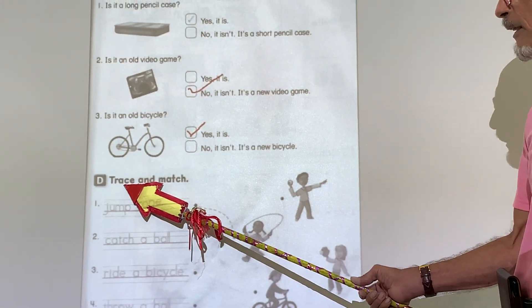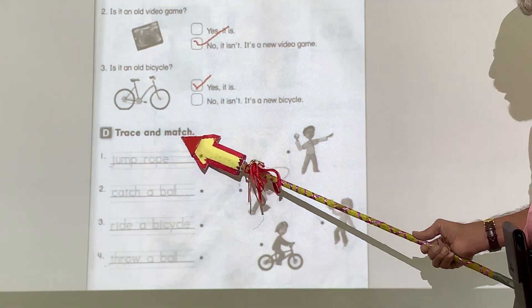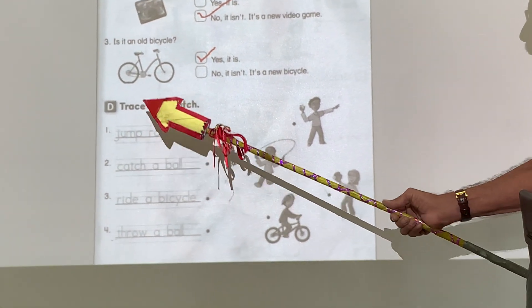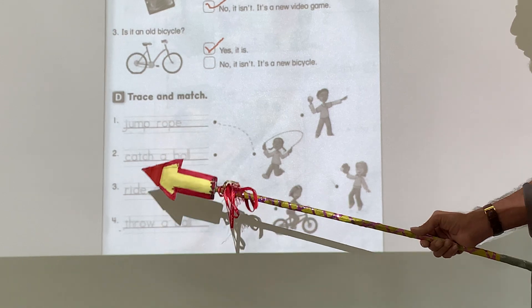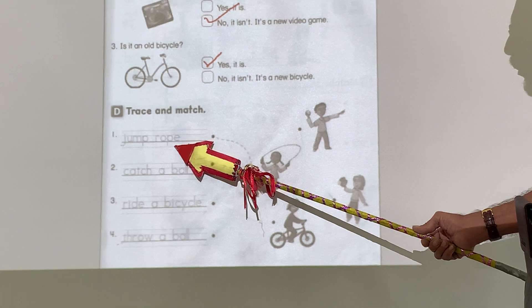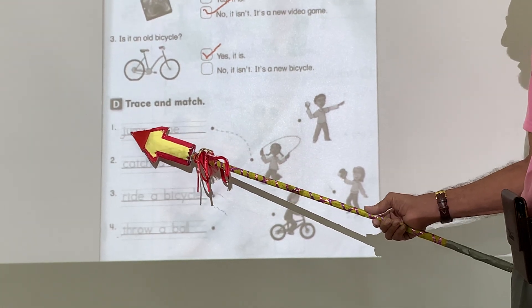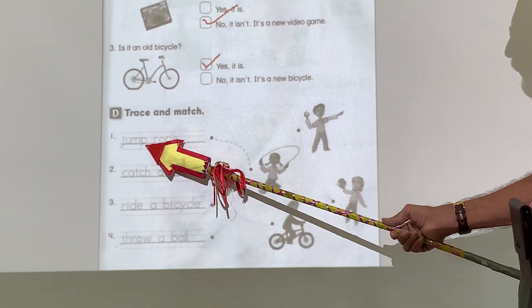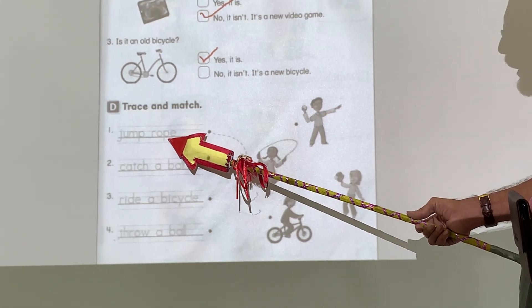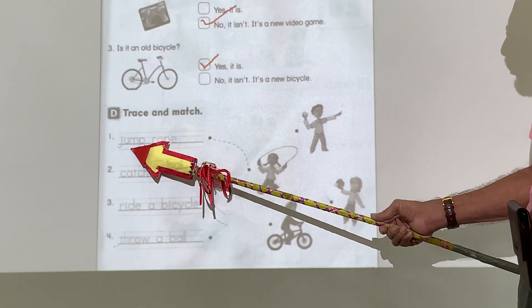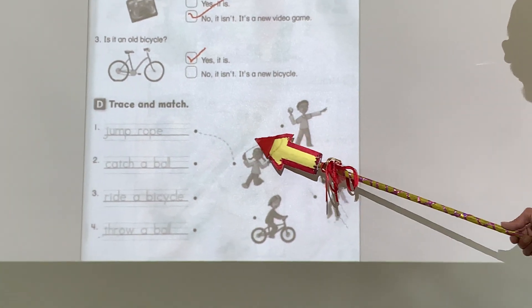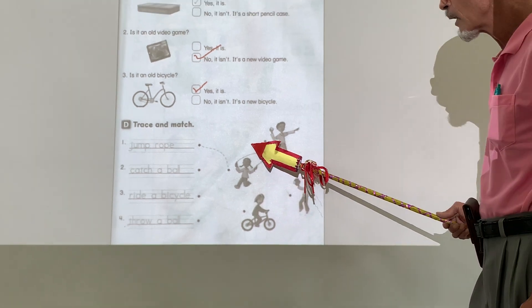Now, this down here says trace and match. Trace and match. Remember, on page 42, we talked about a jump rope. Right? Jump rope. J-U-M-P-R-O-P-E. Jump rope. So, you draw a line to the jump rope. Like they did here. This is a jump rope.